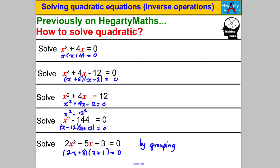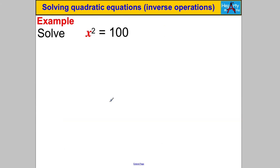It's actually easier than all the cases shown so far, but sometimes students are so in factorizing mode that they forget there's an easier approach. We can use what's called inverse operations. Imagine someone told you to solve X² = 100 — pause the video and tell me what X is.